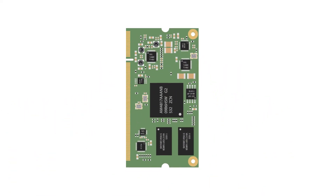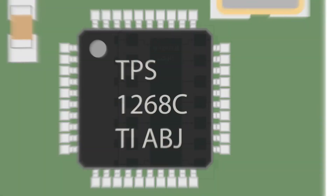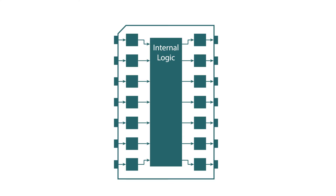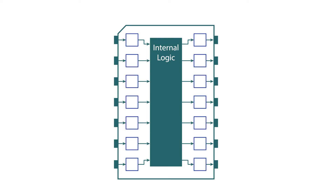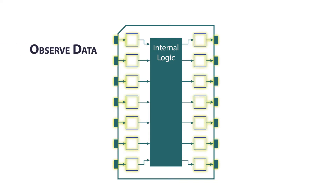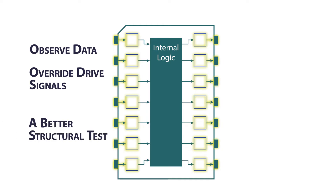It makes internal access almost impossible as nodes are buried under packages such as ball grid arrays. Boundary scan is an ingenious approach to structural testing that overcomes these challenges. Instead of relying on mechanical connections for access, it adds dedicated test circuitry to the system's ICs, using special registers inserted at the I/O pins. These registers can observe data on the I/O pins, and they can be used to override drive signals, providing test stimulus to the circuit. It's this combination of stimulating and observing internal nodes that provides a powerful mechanism for accurate structural testing.